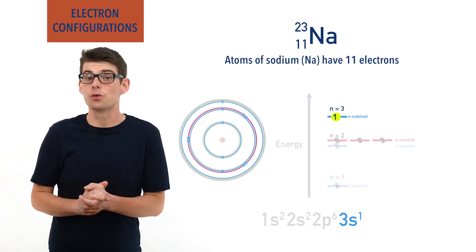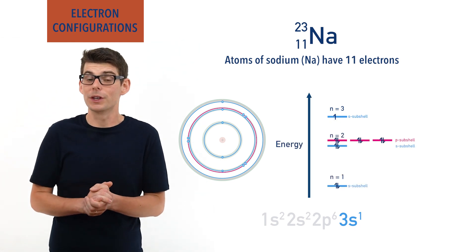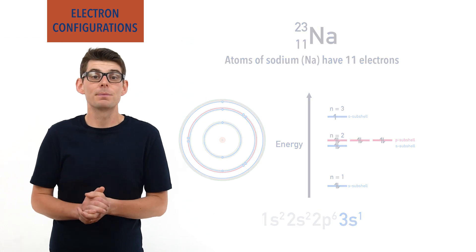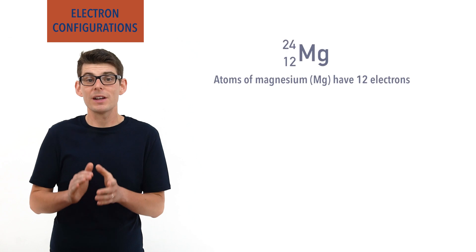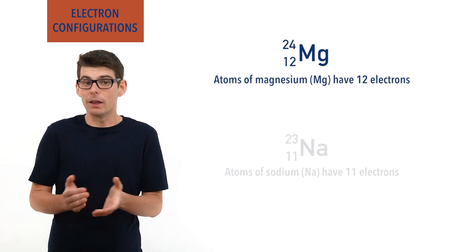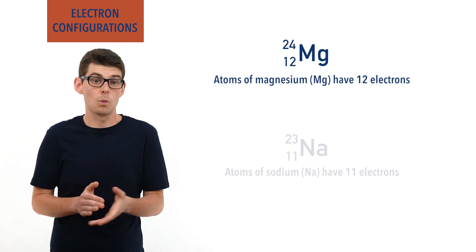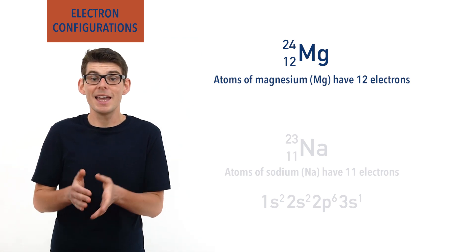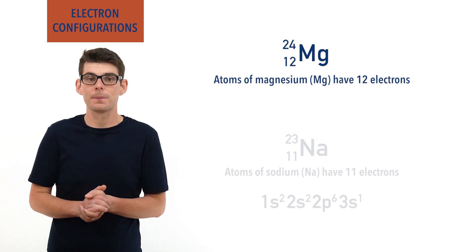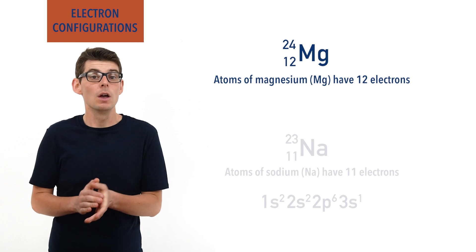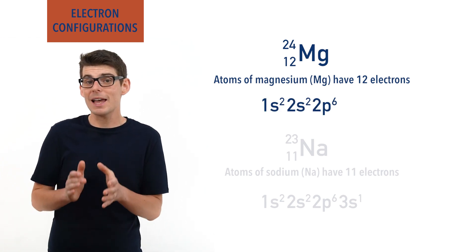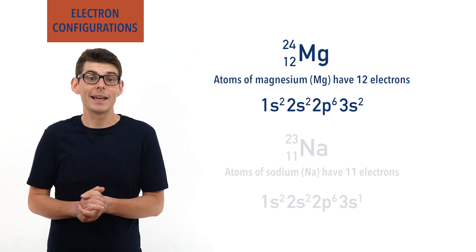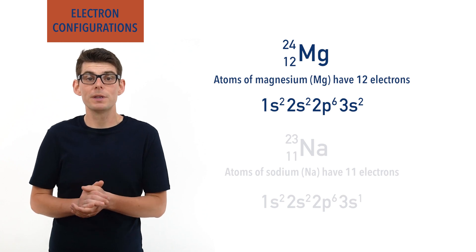We don't actually need to draw out energy level diagrams to figure out an electron configuration — we only really need to know the total number of electrons in the atom. For example, atoms of magnesium have 12 electrons, one more than sodium's 11. If sodium's 11 electrons give 1s2, 2s2, 2p6, 3s1, all we need to do to find magnesium's configuration is add one more electron. The start of the configuration is exactly the same — 1s2, 2s2, 2p6 — however now the 3s1 becomes 3s2 as another electron is added. This gives magnesium an electron configuration of 1s2, 2s2, 2p6, 3s2.